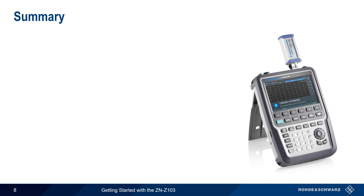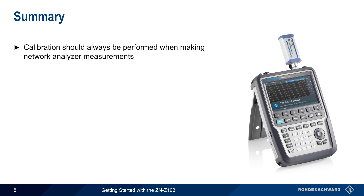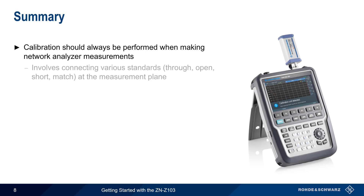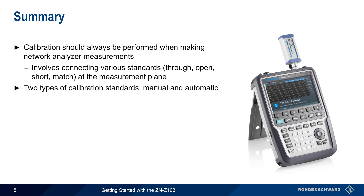Let's end with a brief summary. Calibration is vital for accurate network analysis and should always be performed before making measurements. This process involves connecting various standards, such as open, short, and match, at the measurement or calibration plane. These standards can either be manually connected and disconnected, or can be automatically switched in and out with an automatic calibration or Auto-Cal unit.